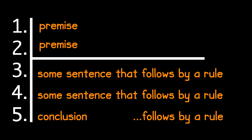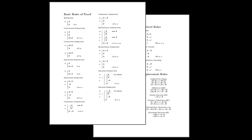Every sentence after that horizontal line has to be justified by some rule. All the rules of proof that we're going to discuss are summarized on the last two pages of the textbook. This provides a valuable reference.